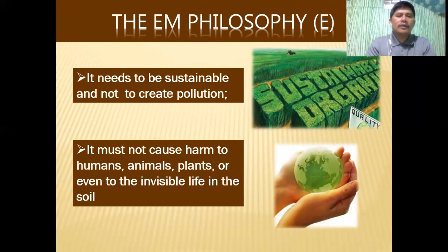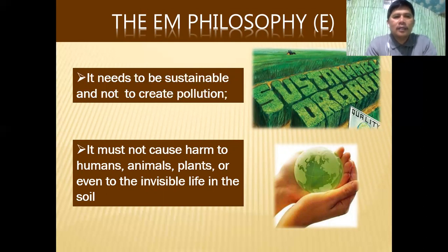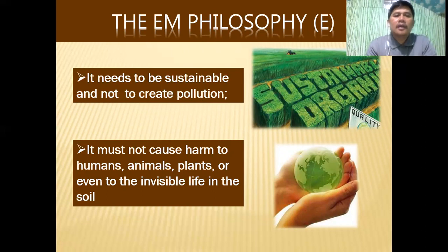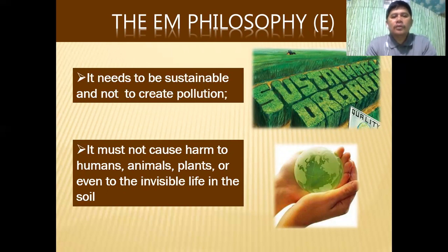EM must not cause harm to humans, animals, plants, or even to invisible life in the soil. The problem with insecticide and chlorine, for example, is that when we apply chlorine to water or spray chemicals on our farm, we kill both the good and bad bacteria — including beneficial insects like spiders and bees. Through the use of EM, these organisms are not harmed.